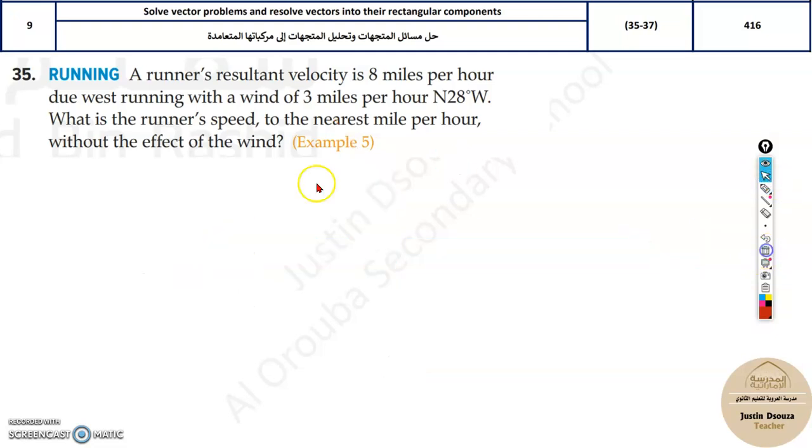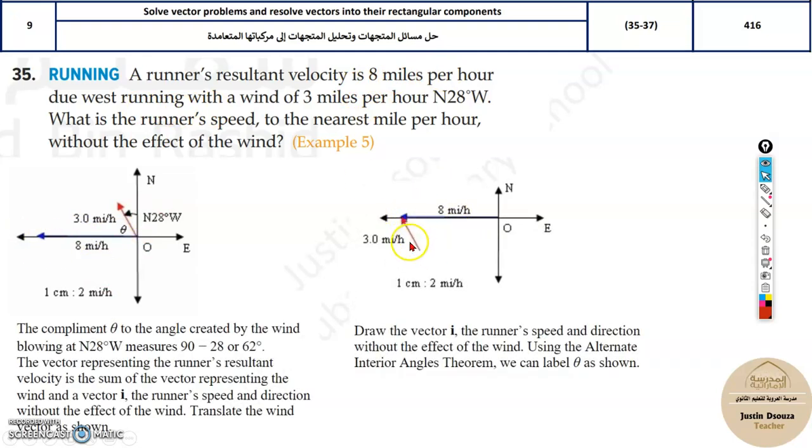Let me show you the figure. This angle is given as 28 degrees, that's the wind. This is the 8 miles per hour, the final resultant. We'll translate it over here. Whatever this angle was here, this will be the same angle over here. So this would be the position where he was running. This will be theta, that's 90 minus 28, which is 62. Once you find that theta, you can easily find this magnitude using law of cosines.